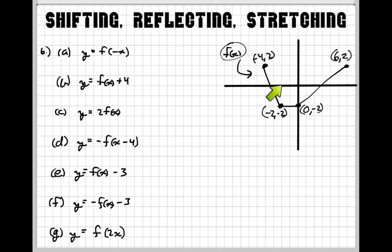So what do these things do to our graph? How do they shift it? Do they reflect it? Do they stretch it? In order to understand this, you really have to understand what shifting is — how shifting is going to move the graph up, down, or left or right. You also have to understand how reflecting can go from left to right, or top to bottom — it just kind of flips the graph.